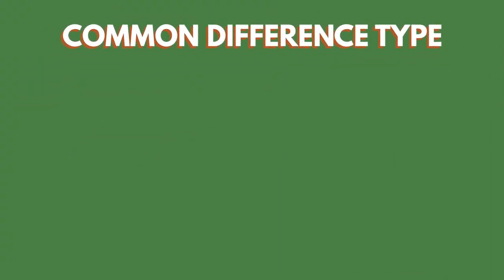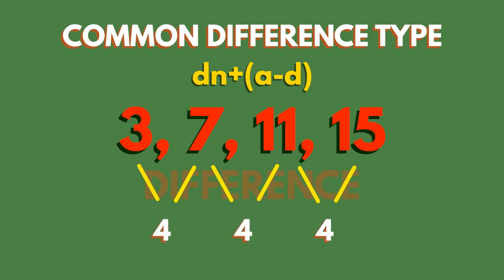The common difference type is represented like this. It applies for any sequence such as this, where there is a common difference between the numbers, in this case 4. You can always find the formula for the nth term using this.